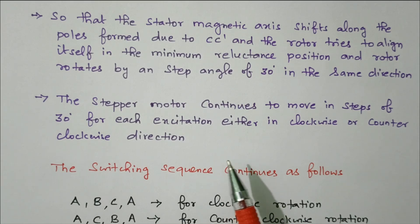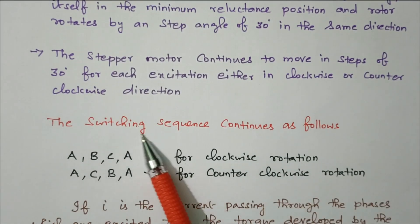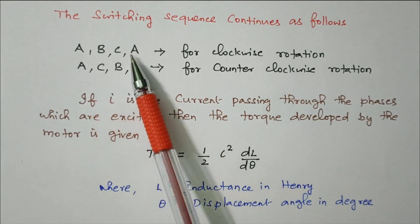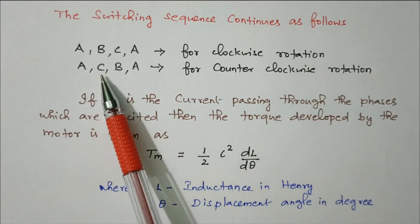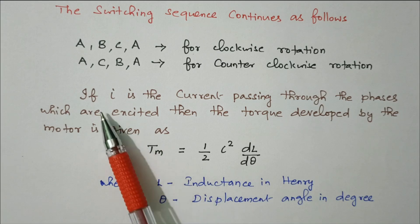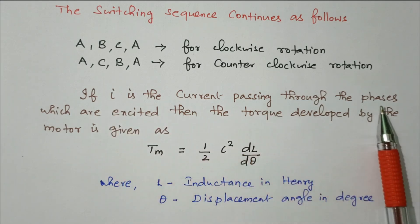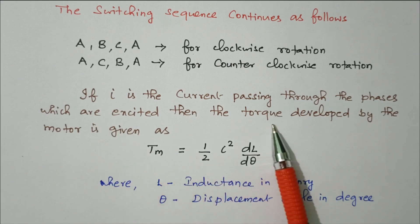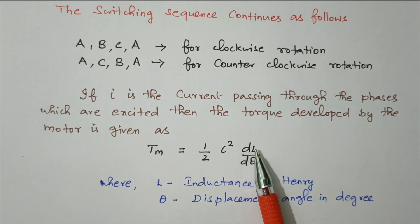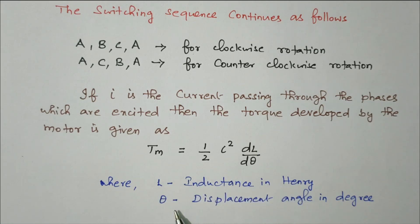The stepper motor continues to move in steps of 30 degrees for each excitation, either in clockwise or counterclockwise direction. a-b-c-a gives clockwise rotation; a-c-b-a gives counterclockwise rotation. The torque equation: if i is the current passing through the excited phase, the torque developed by the motor is T_m = ½ i² (dL/dθ), where L is inductance in henries and θ is the displacement angle in degrees.